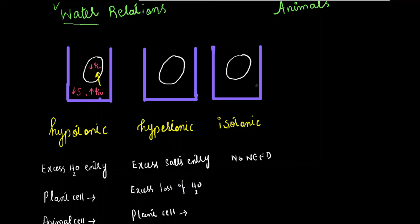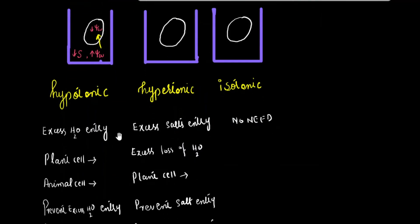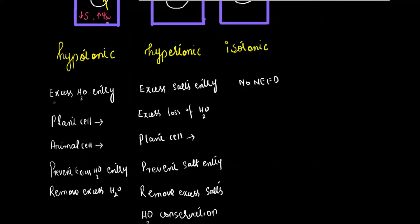In this situation, the condition that forms is excess entry of water. If a plant cell is present in this environment, the plant cell becomes turgid. But if an animal cell is present in this condition, like a red blood cell, it will burst because cell wall is not present.